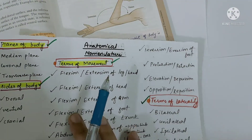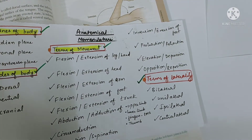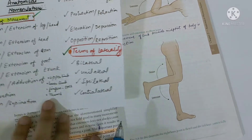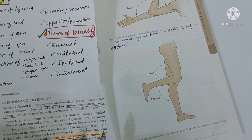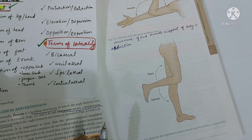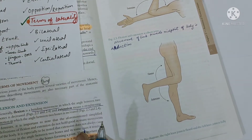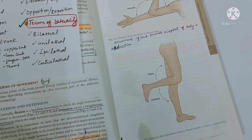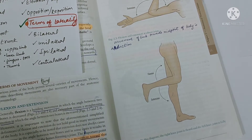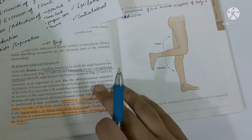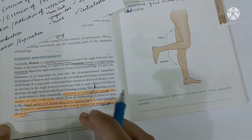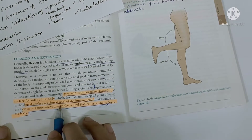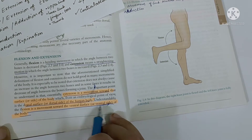Now we will study the terms of movements, which are very important. First, we will study flexion and extension of the leg and hand. In flexion, there is a bending moment in which the angle between two bones decreases. The angle between the two bones increases in extension. Extension involves movement on the dorsal side of the body, and flexion involves movement on the ventral side.